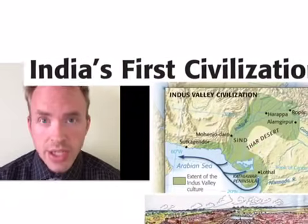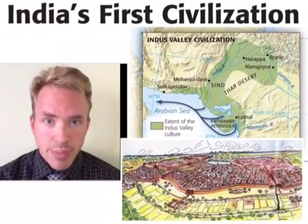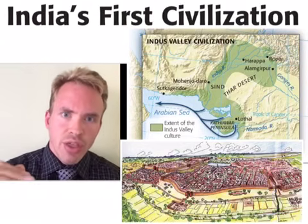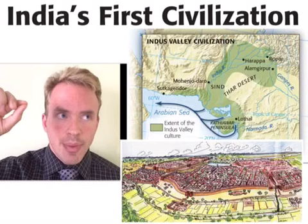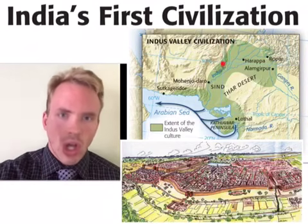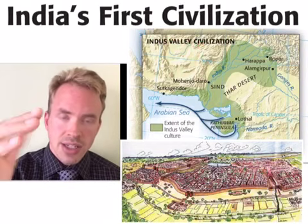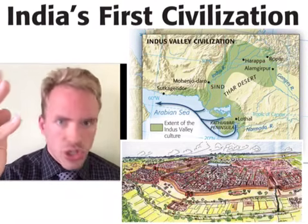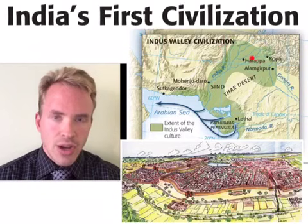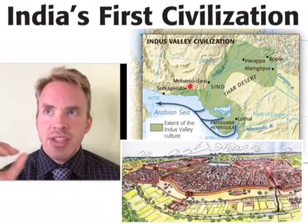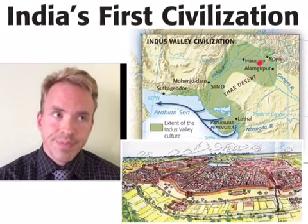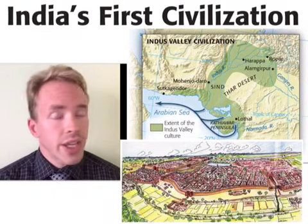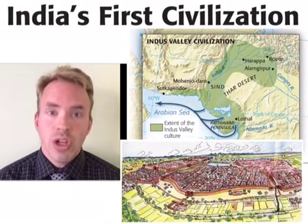Civilization begins in Southern Asia much the same way it began in Mesopotamia — around the same time. Instead of being based around the Tigris and Euphrates Rivers, the city states in Southern Asia end up rising around the Indus River Valley. We call this earliest Indian civilization the Indus River Civilization. The two most famous cities are Harappa and Mohenjo-daro. These are city states much like Mesopotamia, but a little more mysterious — we cannot read their writing.